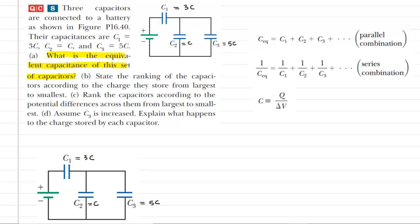To find the equivalent capacitance here, we're going to be following these two equations. Which one we choose will depend on whether we have a parallel combination versus a series combination.